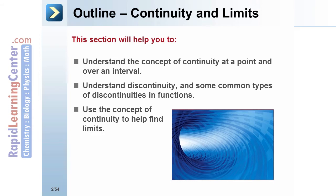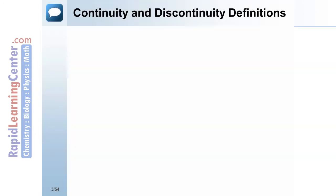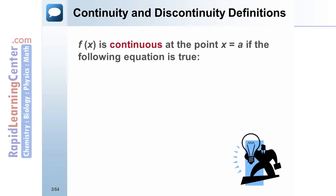Let's begin with a definition of continuity at a point that uses the limit of a function. f(x) is continuous at the point x = a if the following equation is true: the limit of f(x) as x approaches a equals f(a).